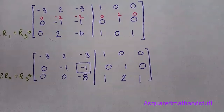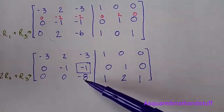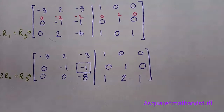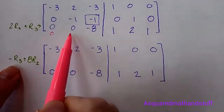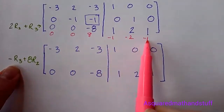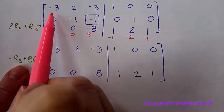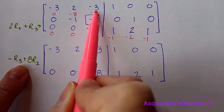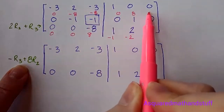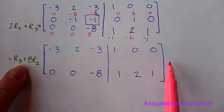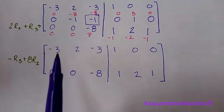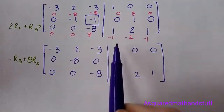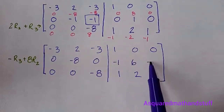So what we will end up doing is multiplying row 3 by negative 1 and adding that to 8 times row 2. Negative row 3 gives us 0, 0, positive 8, negative 1, negative 2, negative 1. And we want to add that to 8 times row 2. 8 times row 2 gives us 0, negative 8, negative 8, 0, positive 8, and 0. So let's add those pink numbers together to get our new row 2. Our new row 2 is 0, negative 8, 0, negative 1, 6, and negative 1.